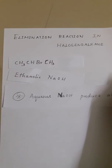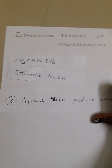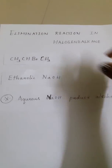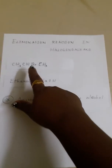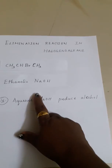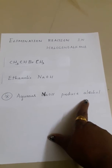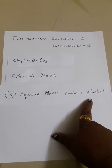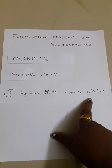Aqueous NaOH, when it reacts with a halogeanoalkane, produces alcohol. That is what we have seen in primary and secondary substitution reactions — aqueous NaOH gives you alcohol as the product.